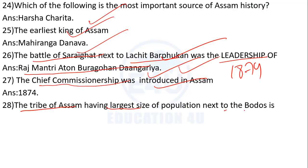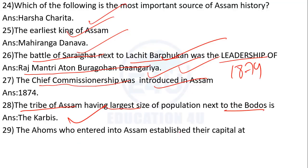The tribe of Assam having the largest population next to the Boros is the Karbis (Carvies). The Ahoms who entered Assam established their capital at Rongpur.